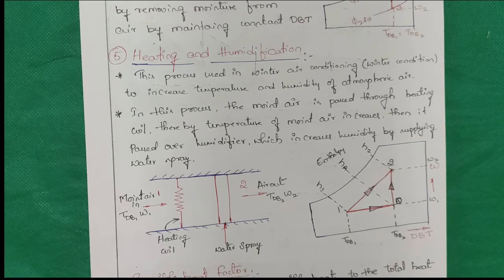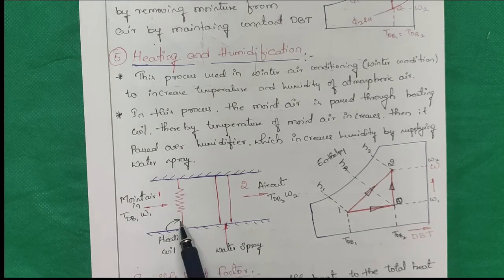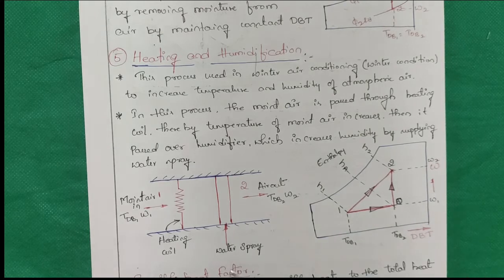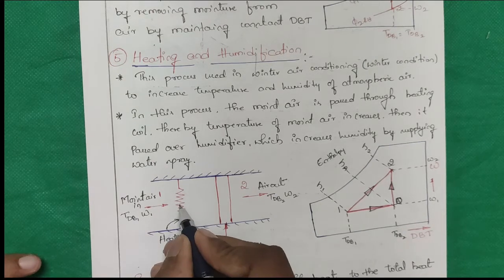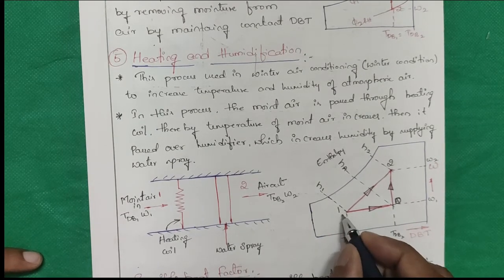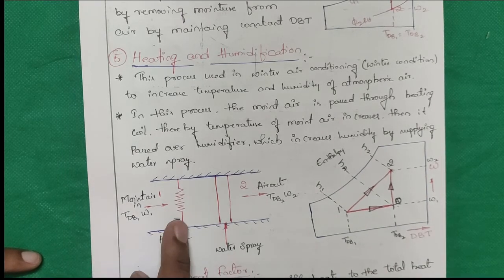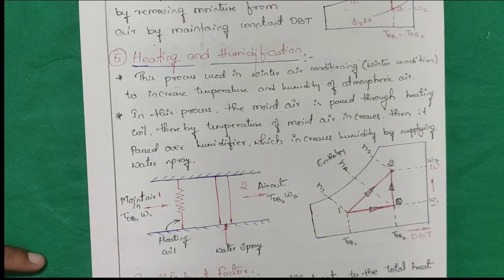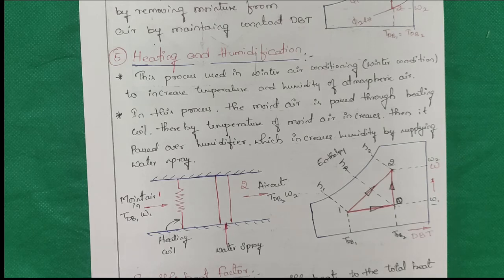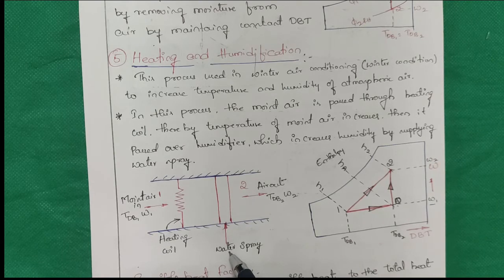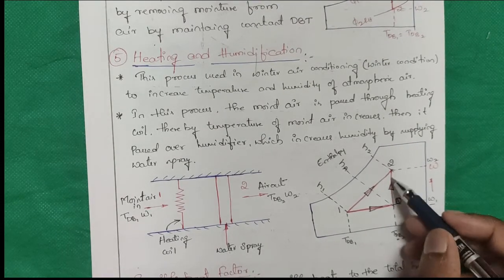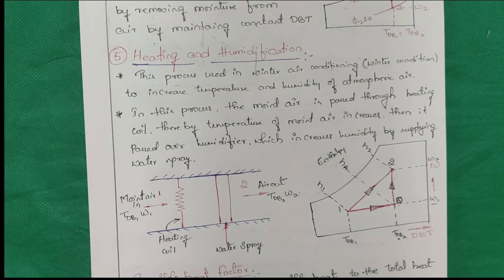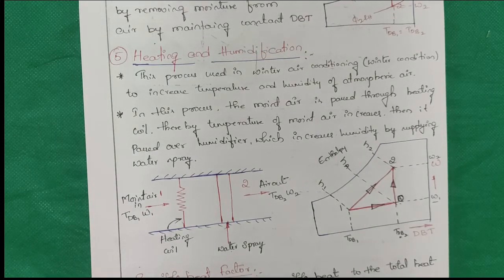How do you perform the heating and humidification process? You have one chamber with a heating coil and a water spray. The moisture is passed over the heating coil — the moisture temperature increases. That is represented on the psychrometric chart as 1 to O, which represents the heating coil — it is sensible heating, so specific humidity remains constant. Next is humidification: you spray water, and at constant temperature humidity increases. That is the humidification process O to 2. When you increase humidity, relative humidity also increases.